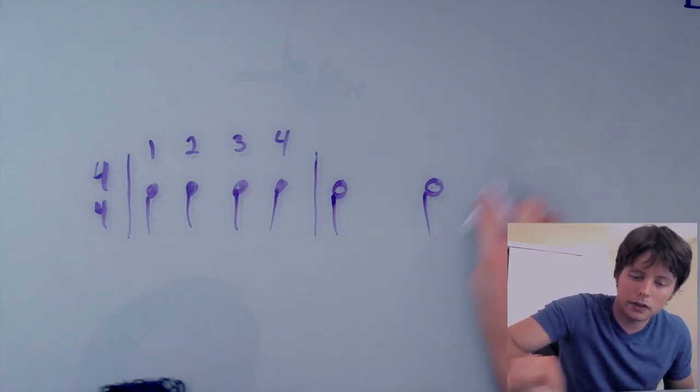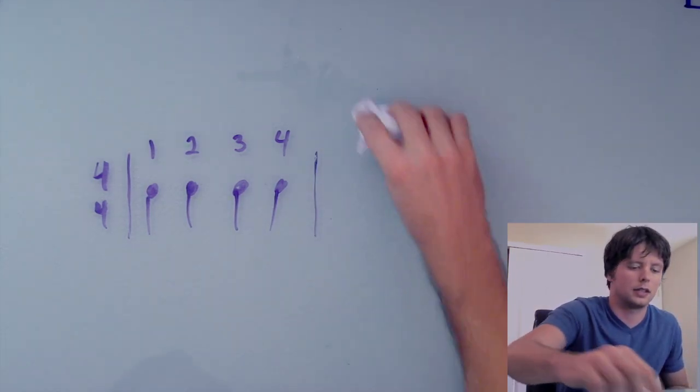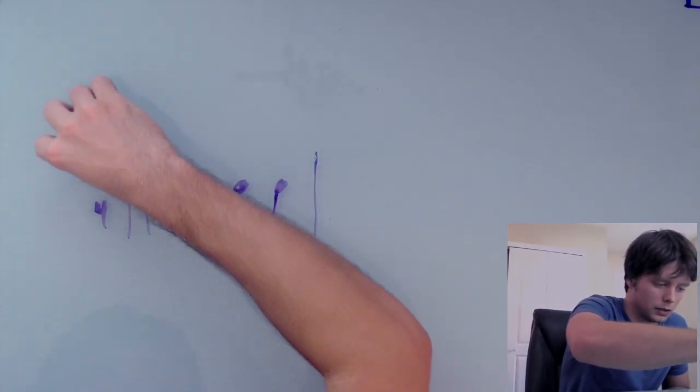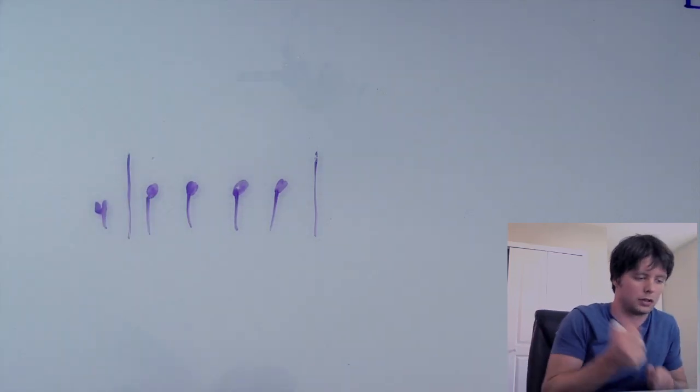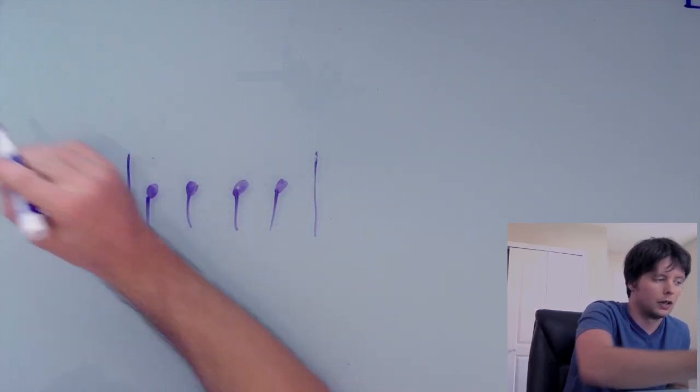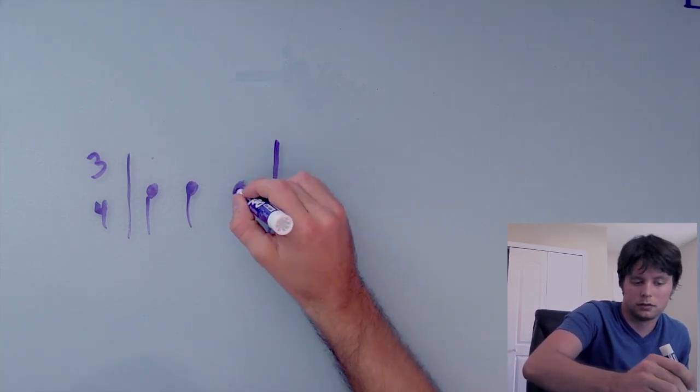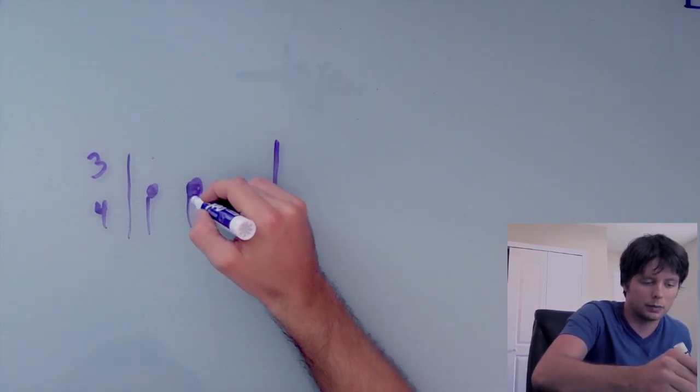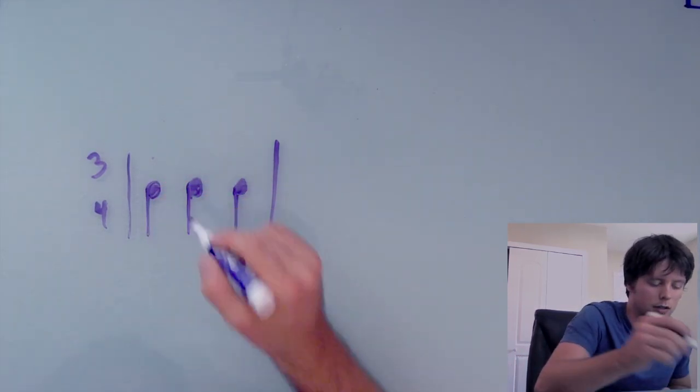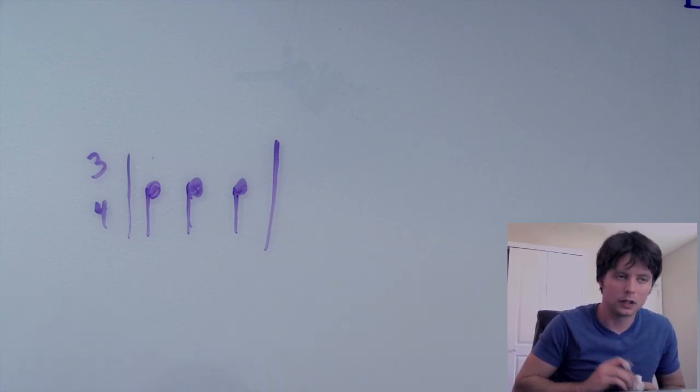I'm going to show you a few other time signatures where they kind of work the same way. For example, 3-4, kind of the same deal. Three quarter notes in a measure. And in this case, we have three beats. So that lines up really nicely.